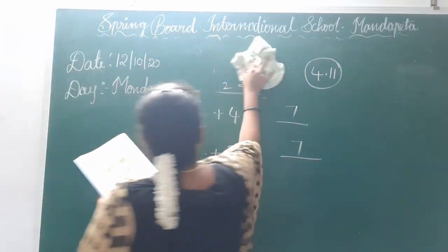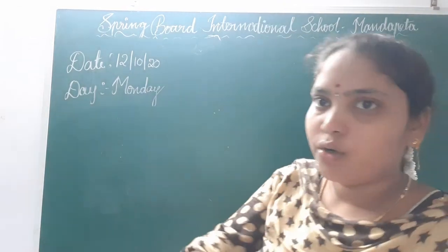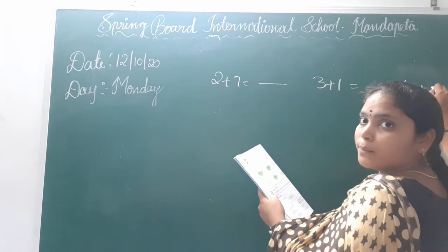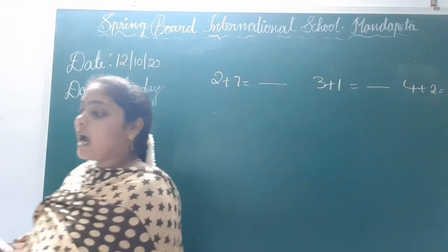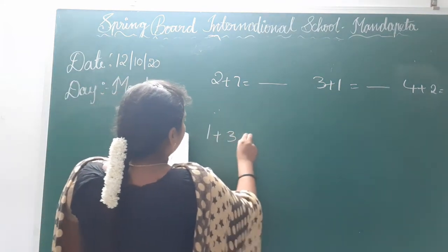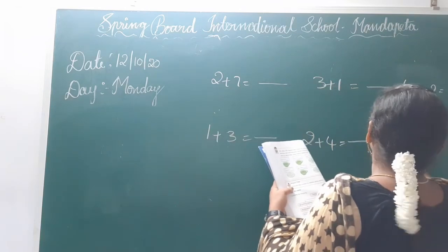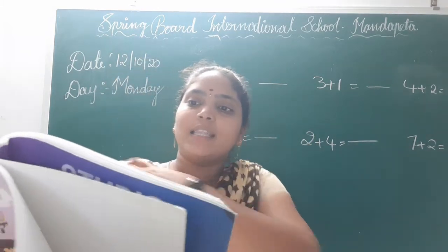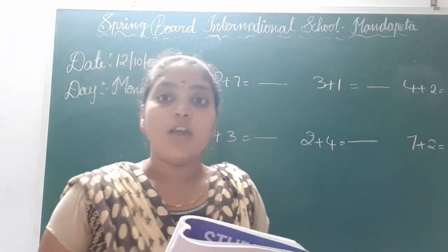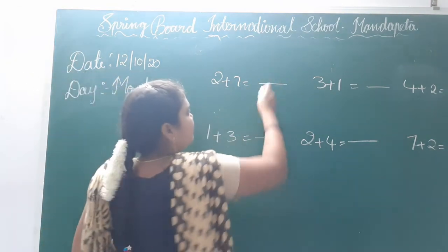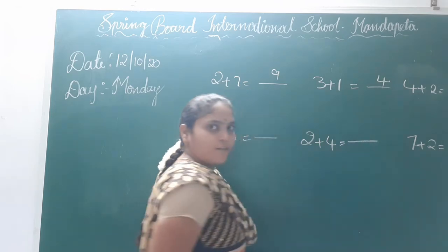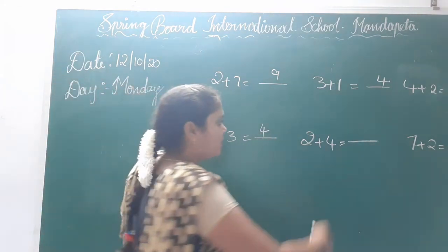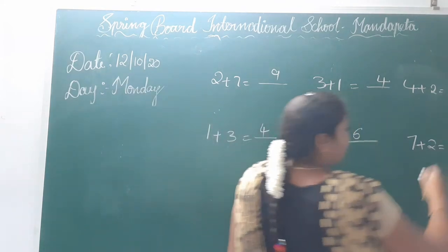Next, 4.12. 2 plus 7 equals dash, 3 plus 1 equals dash, 4 plus 2 equals dash. The cups and saucers are mixed up. We add the numbers near the cups and saucers to find the pairs with the same total. First find the totals: 2 plus 7 is 9, 3 plus 1 is 4, 4 plus 2 is 6. Then: 1 plus 3 is 4, 2 plus 4 is 6, 7 plus 2 is 9.